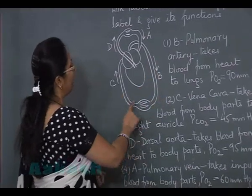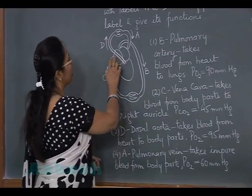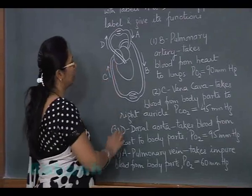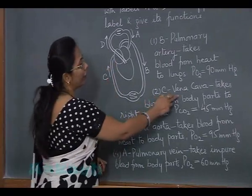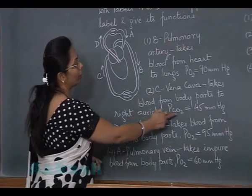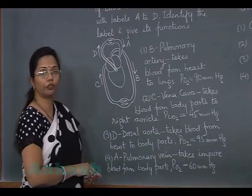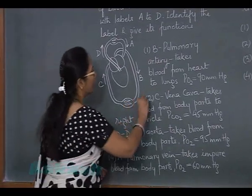From the systemic, that means from the body part which is returning to the right side of the heart, to the right atrium, C is vena cava which is taking blood from the body parts to the right atrium. Here the partial pressure of carbon dioxide is 45 mm of mercury. So our correct choice is 2, and thus the answer is 2.